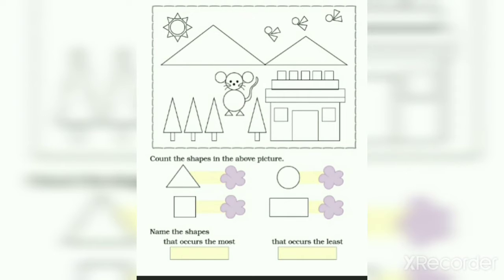Now we count triangles. 1, 2, 3, 4, 5, 6, 7, 8, 9, 10, 11, 12, 13, 14, 15, 16, 17, 18, 19, 20, 21, 22. Here we have 22 triangles.